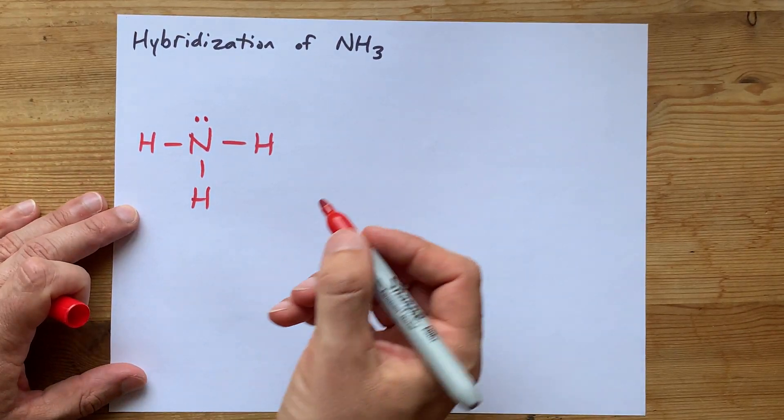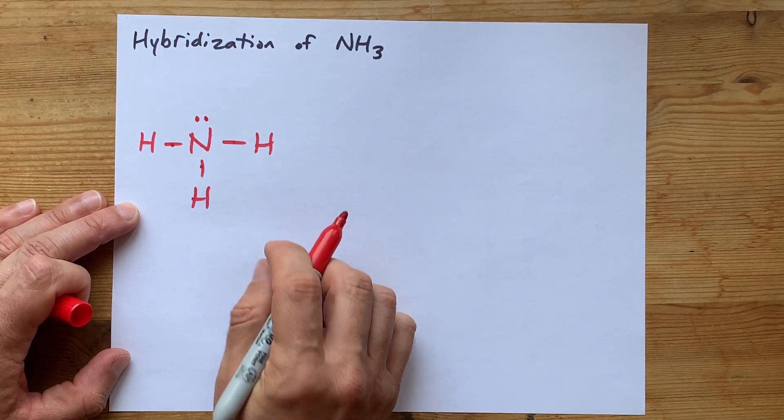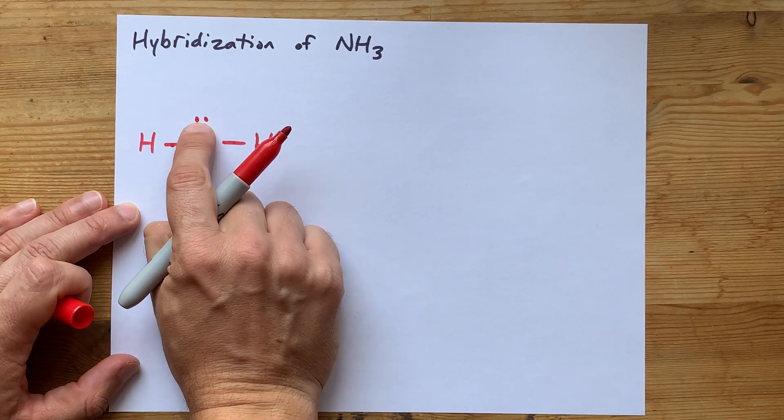Great. Now, the sigma bonds that you make between the nitrogen and each hydrogen and the lone pair—that's 1, 2, 3, and 4—